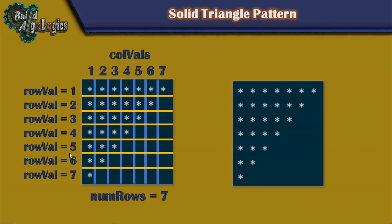As you can see, the row value is changing from 1 to 7, and for each value of row the inner loop will run a different number of times. For example, when row value is 1, the inner loop will run 7 times and print 7 stars. But for row value 2, the inner loop will run 6 times, and for row value 3 it will run 5 times, and so on.